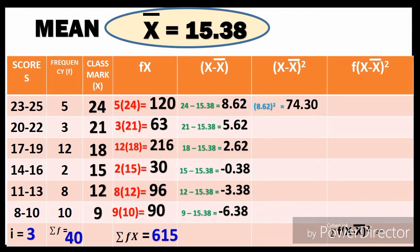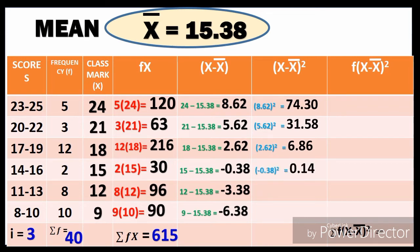Next, we square each value of (X − x̄): 8.62² = 74.30, 5.62² = 31.58, 2.62² = 6.86, (−0.38)² = 0.14, (−3.38)² = 11.42 — because negative times negative is positive — and (−6.38)² = 40.70.